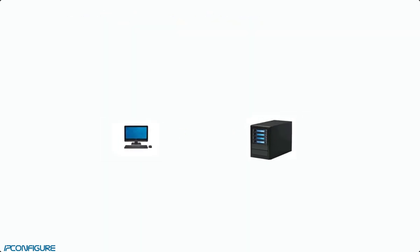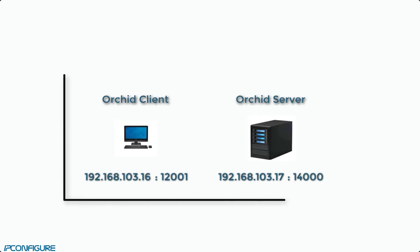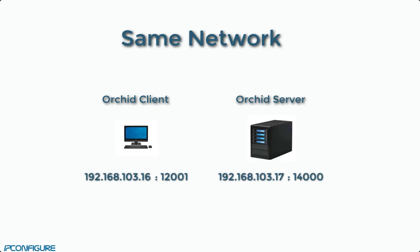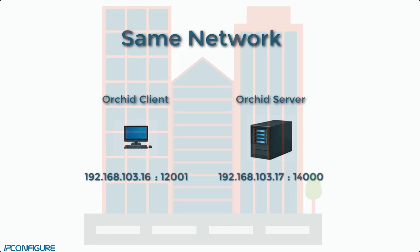Back to our Orchid Core VMS server and client. Once we have an IP address and a port for the client and the server, we have a candidate pair. Now we need to see if these candidates are compatible so they can communicate. Let's say you have an Orchid Core VMS server at your headquarters. You're using a desktop — the client — in the same building on the same network to monitor your security cameras. Via IP addresses, the client will signal to the server that it wants to see some video. The server receives the request, approves it, and then sends video to the client through the specified ports. Since these two devices are on the same network, there are no barriers to overcome and direct media transport is easy.